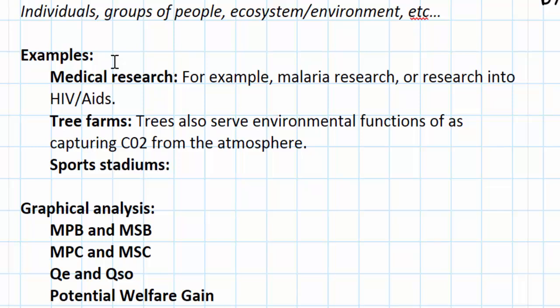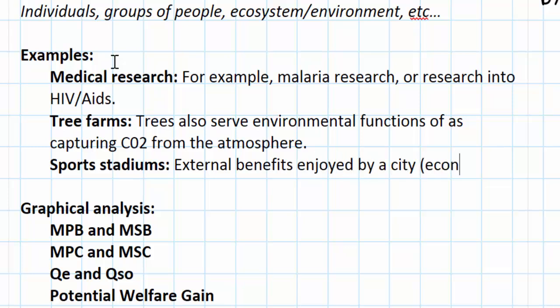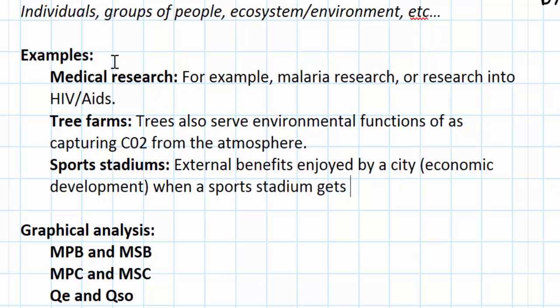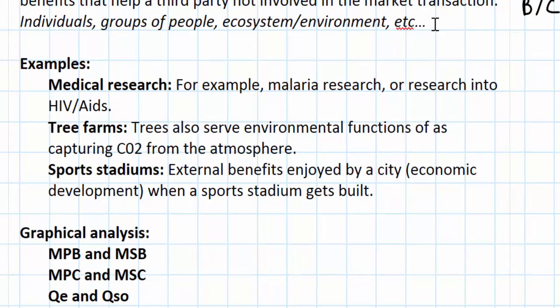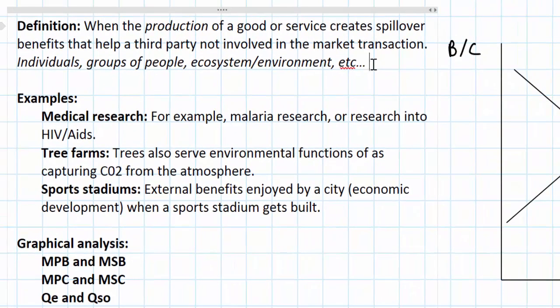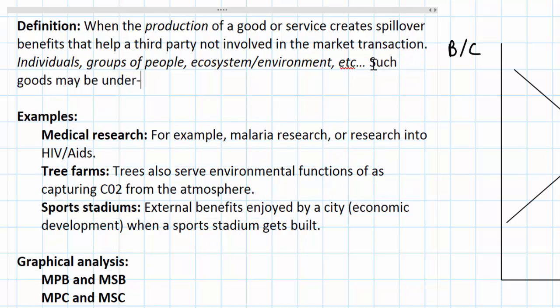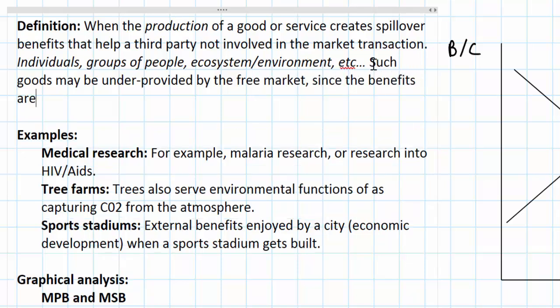Another example is sports stadiums. Assume an NFL team is considering building a new stadium in a city — the cost is extremely high, but the benefits are not only enjoyed by the team itself but to some extent by the community, in the form of economic development. One thing all of these examples have in common is that they may be under-provided by the free market because of the external benefits enjoyed by a third party.